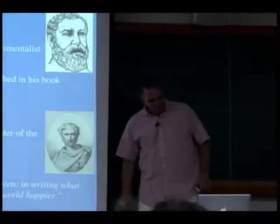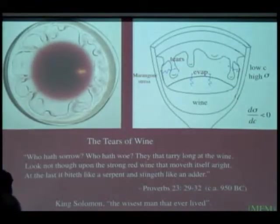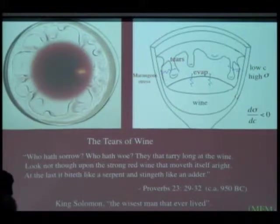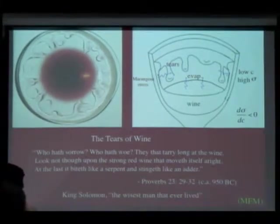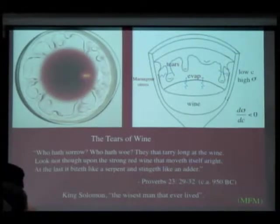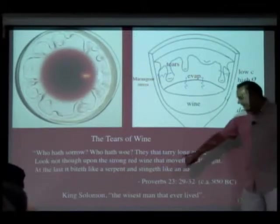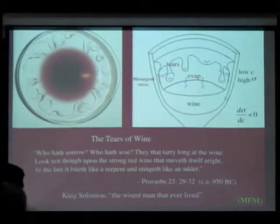Pliny the Elder also mentioned truth coming out in wine. This was written by King Solomon, thought to be the wisest man that ever lived. Translated into Brazilian it would say: stick with the wine and don't touch the pinga. In old English: 'who hath sorrow, who hath woe' — those that spend too much time with wine. 'Look not upon the strong red wine that moveth itself aright' — meaning it climbs in the glass — 'at the end it bites like a snake and stings like an even worse snake.'